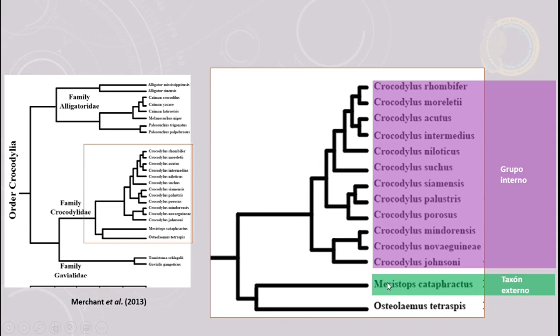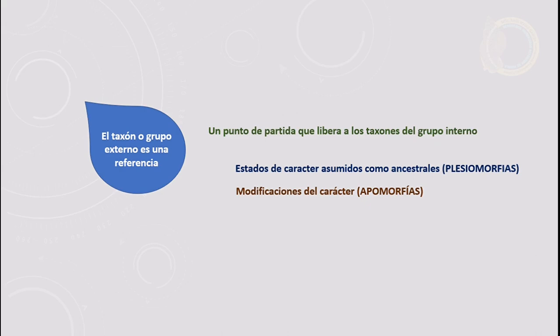Así que me quedo con Mecistops cataphractus como taxón externo. Al final de cuentas, ambas especies derivan del mismo ancestro y son hermanas del grupo de interés. Abundemos más sobre el taxón o grupo externo. Este viene a ser una referencia: me va a representar desde dónde puedo partir y además va a liberar a los taxones del grupo interno, es decir, les va a permitir a todos los taxones del grupo de interés hacer combinaciones entre ellos.